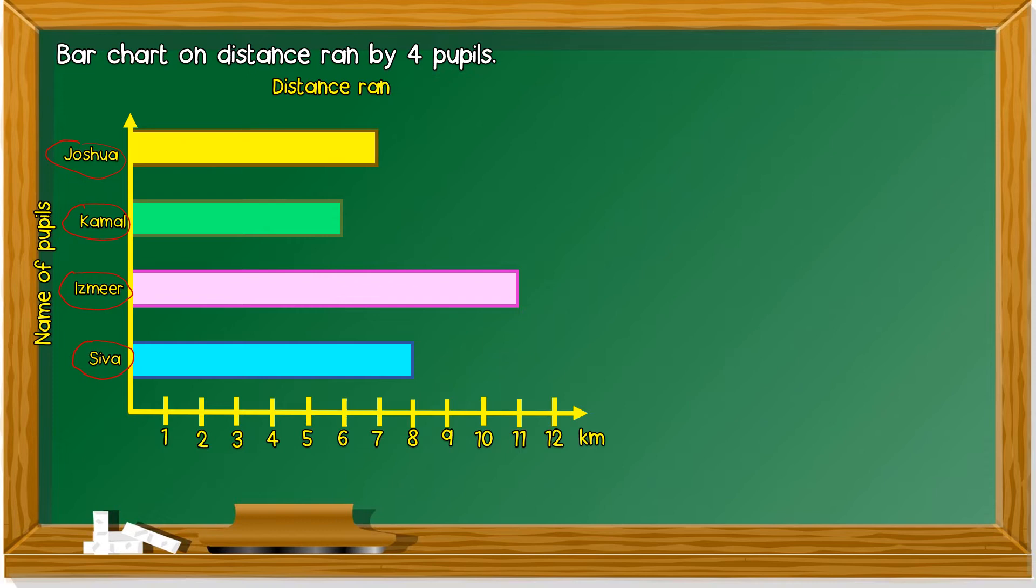We can see here, Joshua ran how far? Seven kilometers. As for Kamal, six kilometers. Ismael, eleven kilometers. And Shiva, eight kilometers.